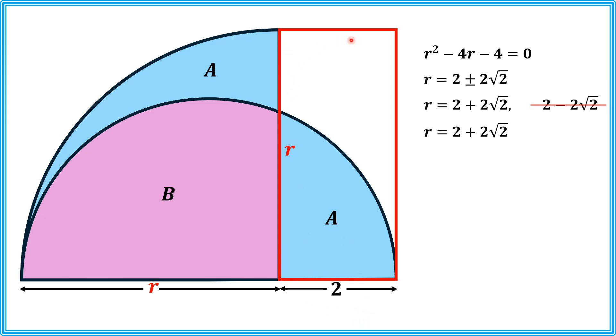we can see that area of this rectangle will be 2 times R. Now, substituting the value of R, we will get area of this rectangle as 9.6568 unit square.